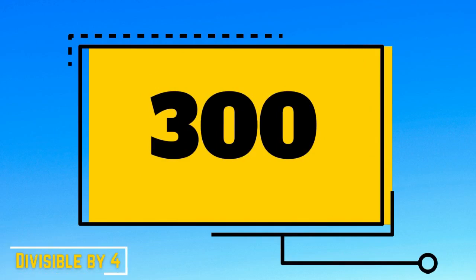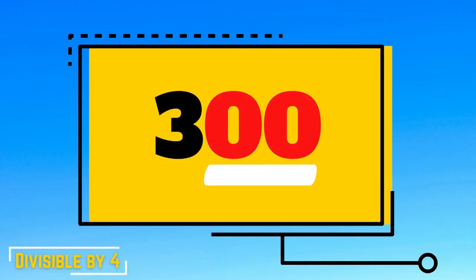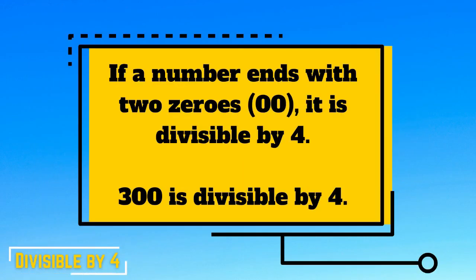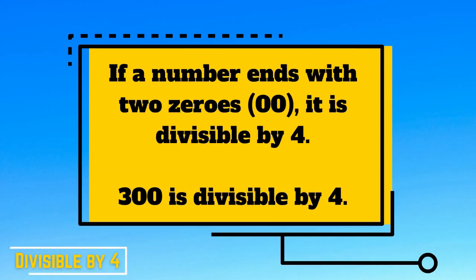Let's have another example. Let's take a look at the last two digits of 300. The last two digits are two zeros. Therefore, our answer is yes — 300 is divisible by 4.